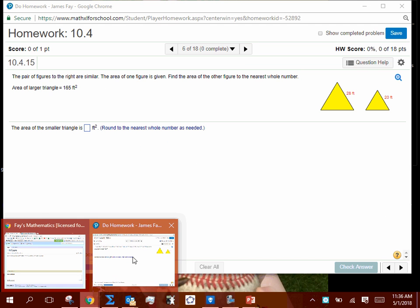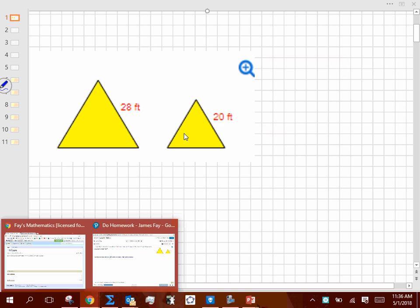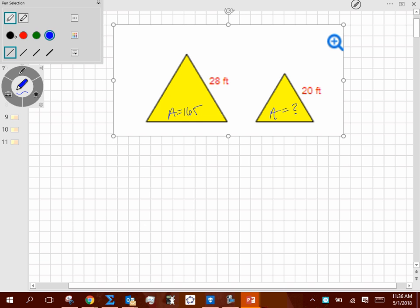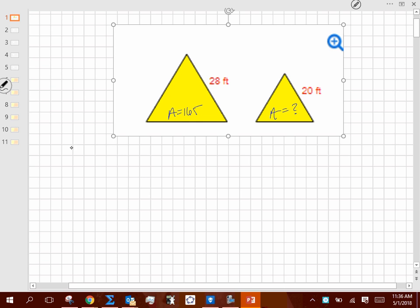In this one, they tell me the area of the larger one is 165. This area here is 165. The area of this one is ultimately what I'm looking for. As I look at this, if I'm going to try to find an area, and I'm using similarity to do that, I need to use that area. So, I'm going to have to use the A squared over B squared concept.